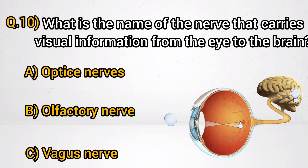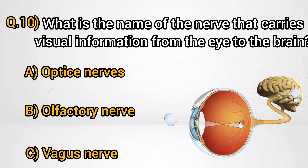Question 10: What is the name of the nerve that carries visual information from the eye to the brain? Answer A: Optic nerve.